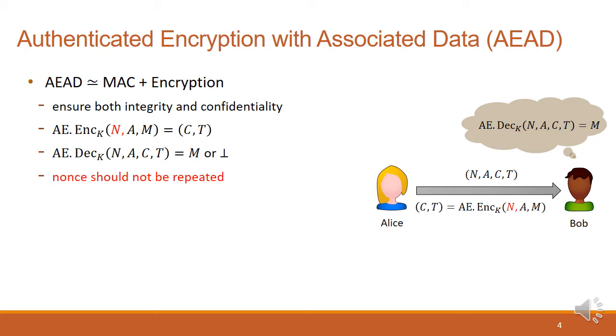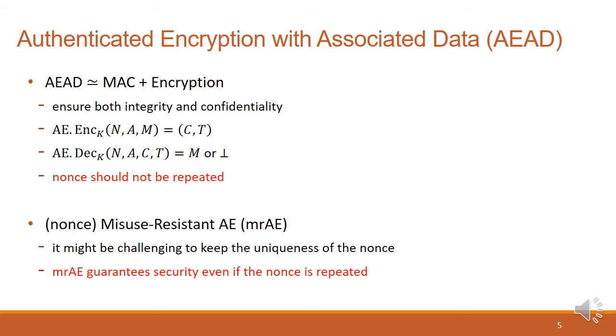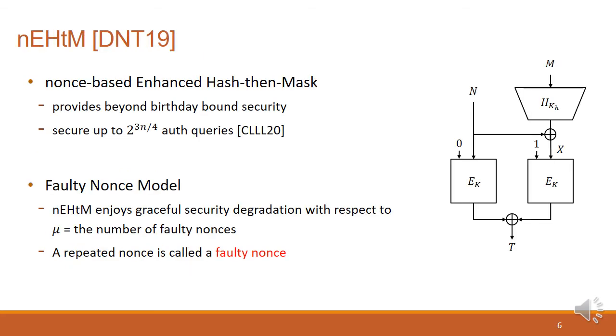Using nonce is a common way to guarantee the variability of the ciphertext, and we call them nonce-based authenticated encryption, or NAE in short. In NAE, security is guaranteed only if a nonce is never repeated. For example, Galois Counter Mode, or GCM, leaks its hash key as soon as a single nonce is used twice. However, it might be challenging to keep the uniqueness of the nonce, for example, in a stateless device where good quality of randomness is not available. Therefore, there are such AE designs achieving nonce-resistance called misuse-resistant AE, or MRAE. MRAE guarantees security, even if the nonce is repeated.